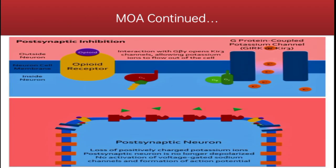In postsynaptic inhibition, opioids bind to opioid receptors on the postsynaptic neuron. Once again, the G-β-gamma subunit is released and interacts with potassium channels. This interaction opens the channels and positively charged potassium ions flow out. So if neurotransmitters were released and depolarization was occurring, the loss of positive charge from potassium ions leaving the neuron negates the positive charge from sodium ions entering the neuron, making it difficult for an action potential to form.